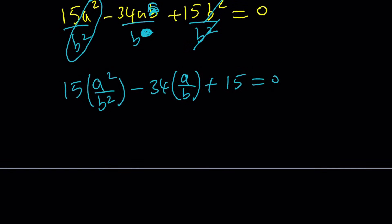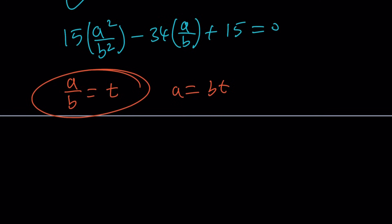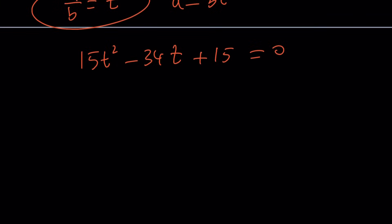Let's set a over b equal to something. How about t? So a is equal to bt, in other words. Let's go ahead and do that. We get 15t squared minus 34t plus 15 equals 0. This is a quadratic equation and I can definitely use the quadratic formula, or you can use the x method and factor this using x method.